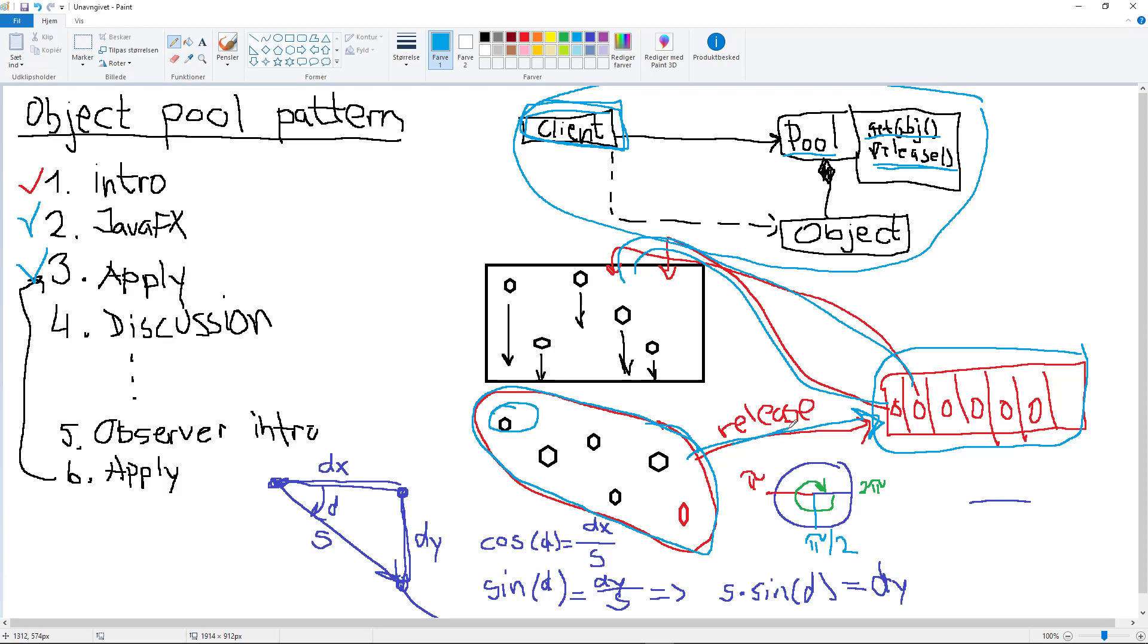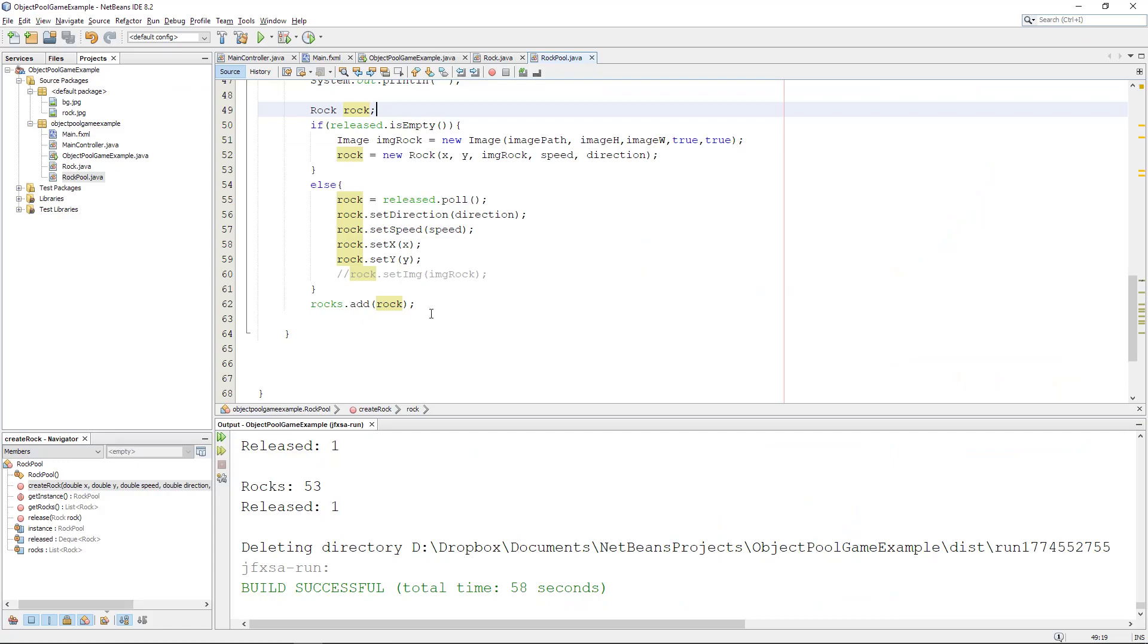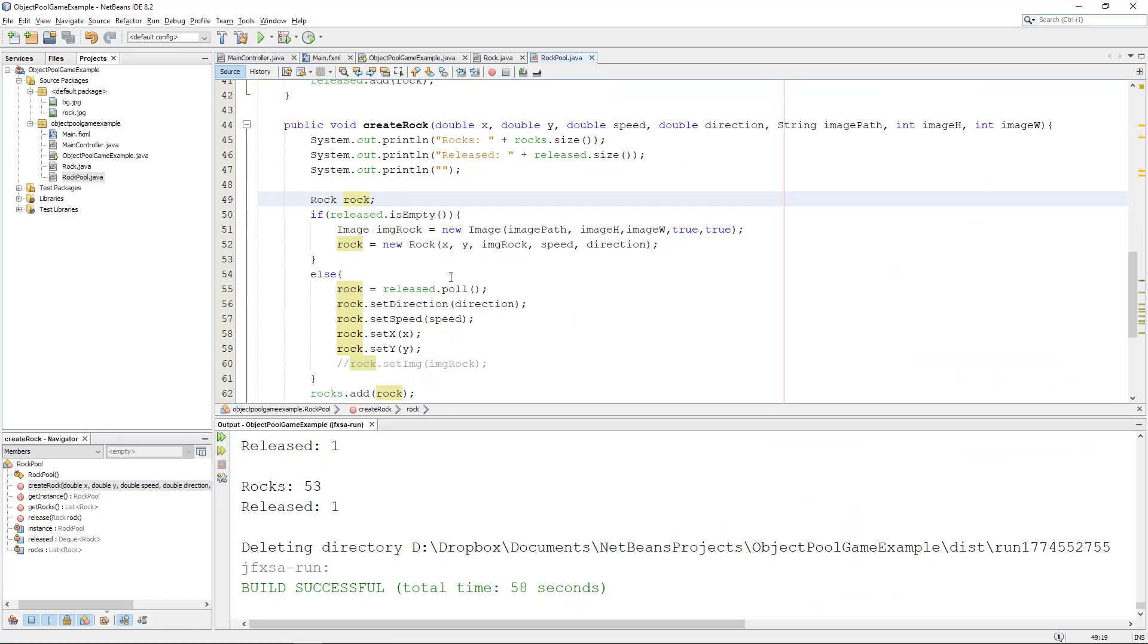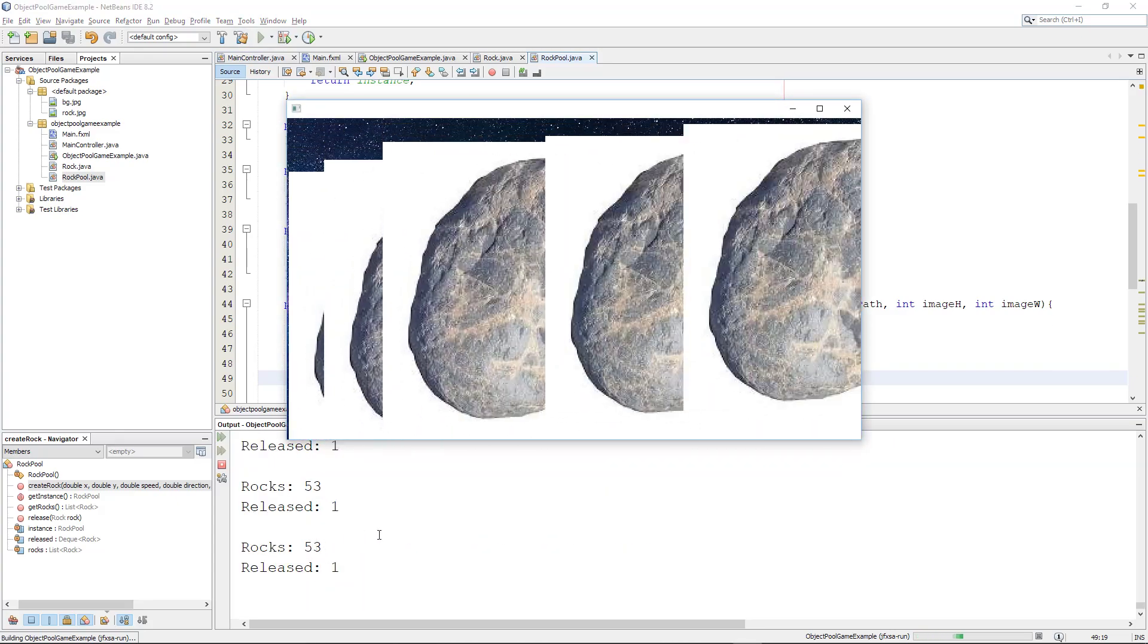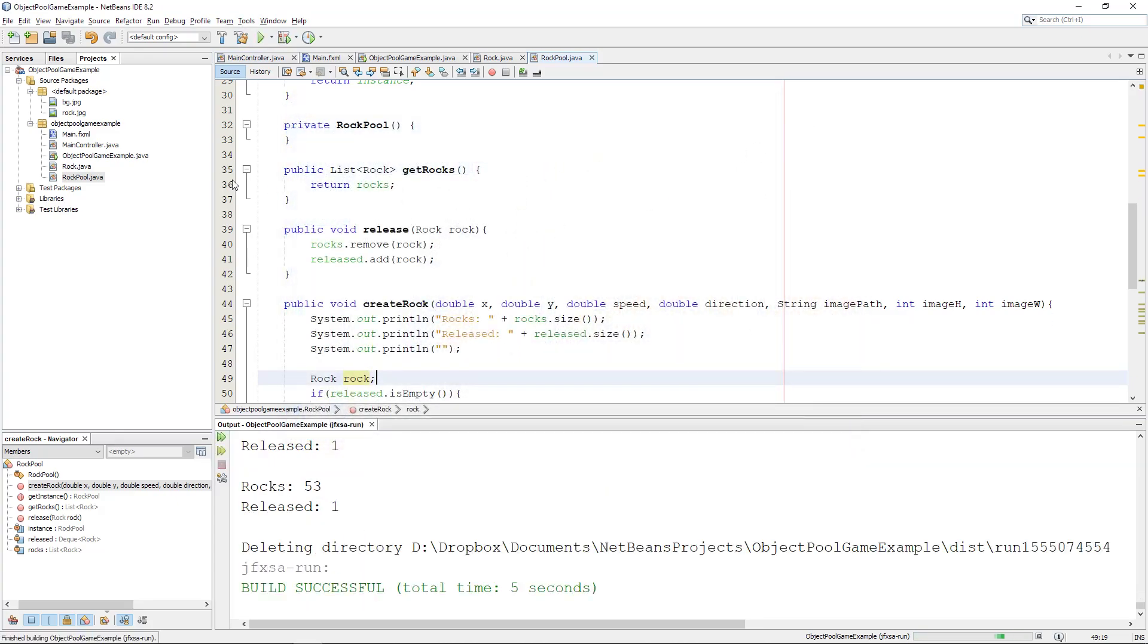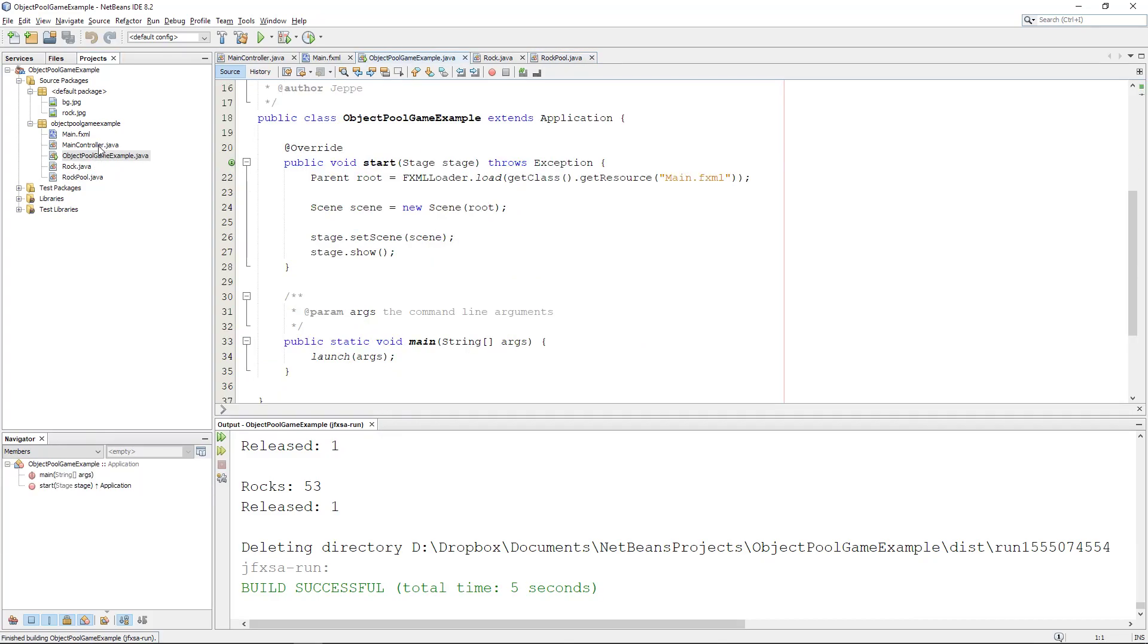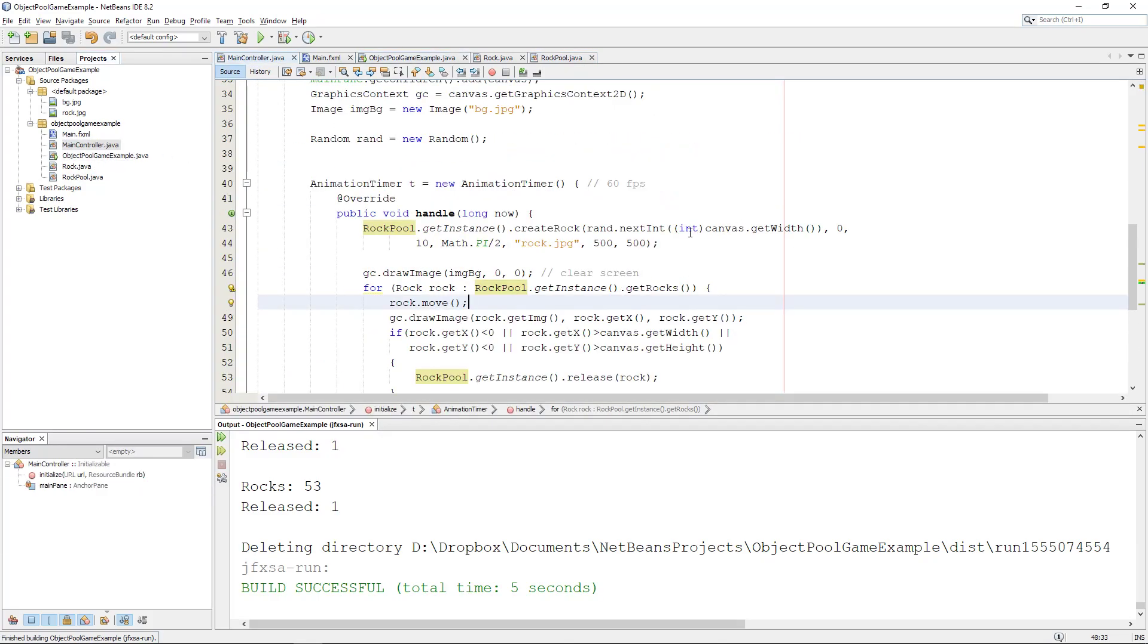In the example that we created in the last video, the amount of objects is actually based on the speed. There are 53 objects. If I go to here where I set the speed to 10, if I set it to 5 it doubles the amount of objects.